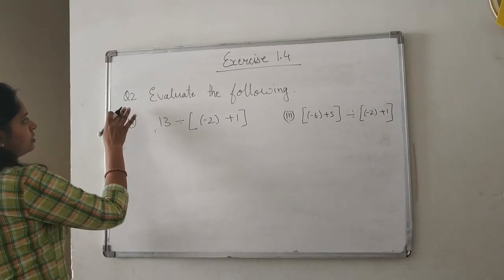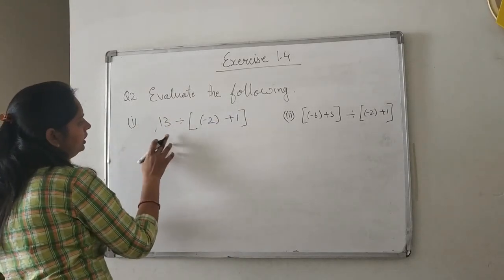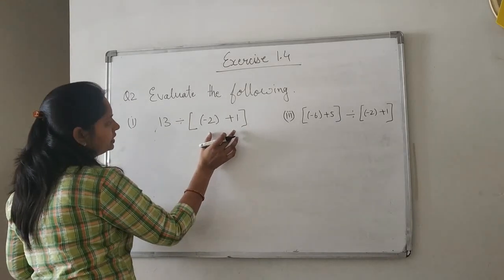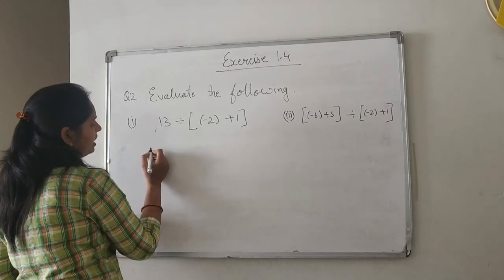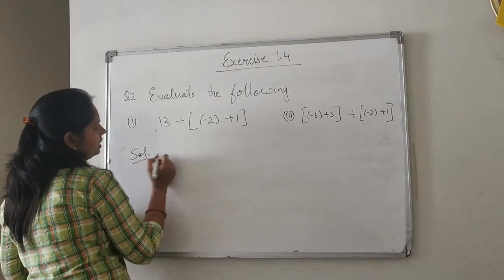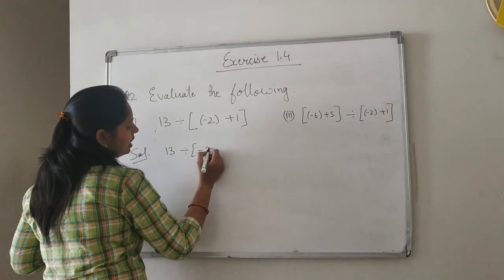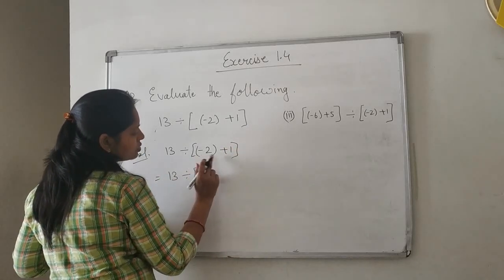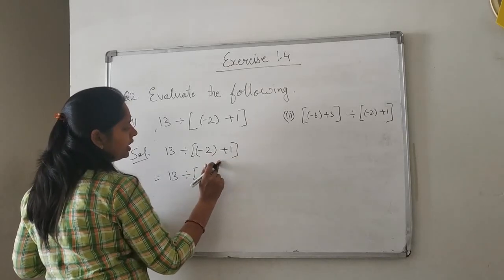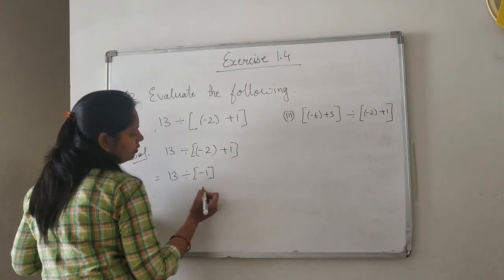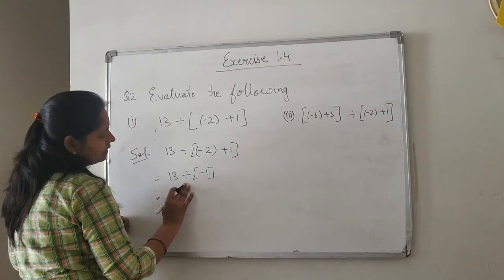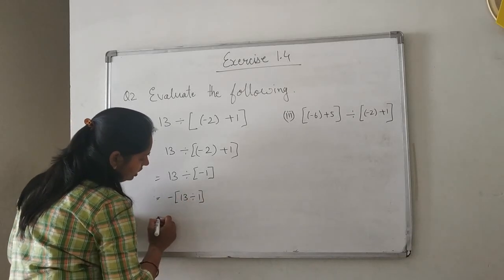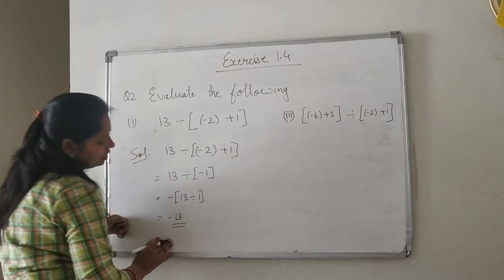Question number 2, evaluate the following. 13 divided by (minus 2 plus 1). By BODMAS rule, we solve the bracket first. Minus 2 plus 1 gives minus 1. Then 13 divided by minus 1 — since one is positive and one is negative — gives minus 13. So the answer is minus 13.